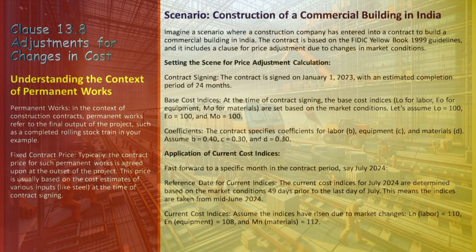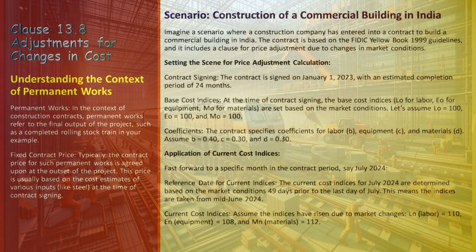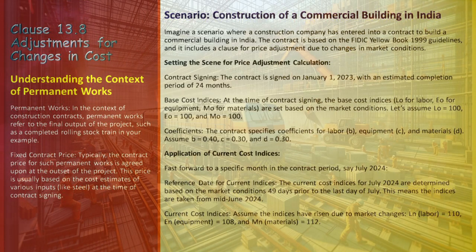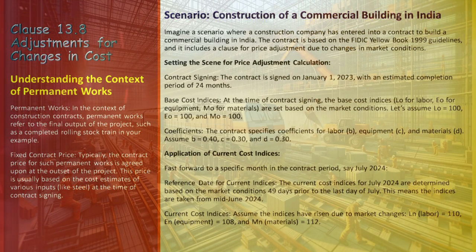Using the formula PN = A + B(LN/L0) + C(EN/E0) + D(MN/M0), we calculate the adjustment multiplier for July 2024. Assuming the fixed coefficient A = 0.10, the calculation is: PN = 0.10 + 0.40(110/100) + 0.30(108/100) + 0.30(112/100) = 0.10 + 0.44 + 0.324 + 0.336 = 1.20. If the value of work completed in July 2024 is 50 crore rupees, the adjusted value considering PN would be 50 crore × 1.20 = 60 crore.